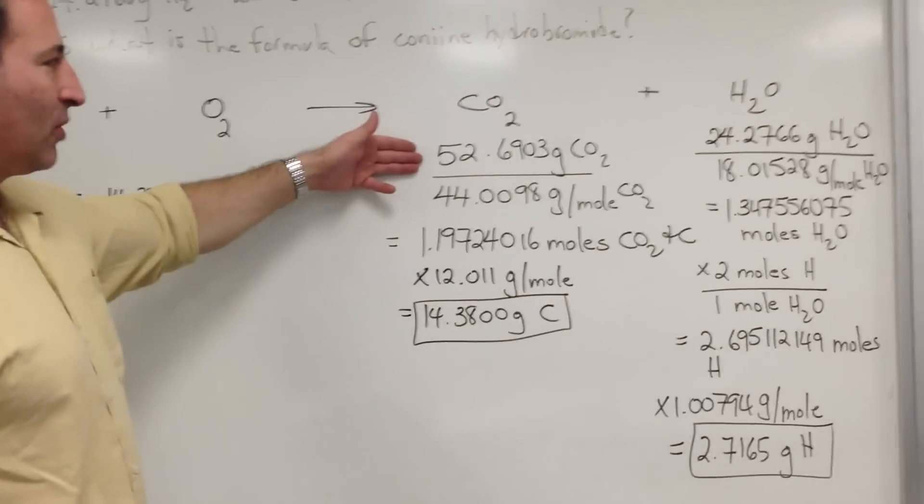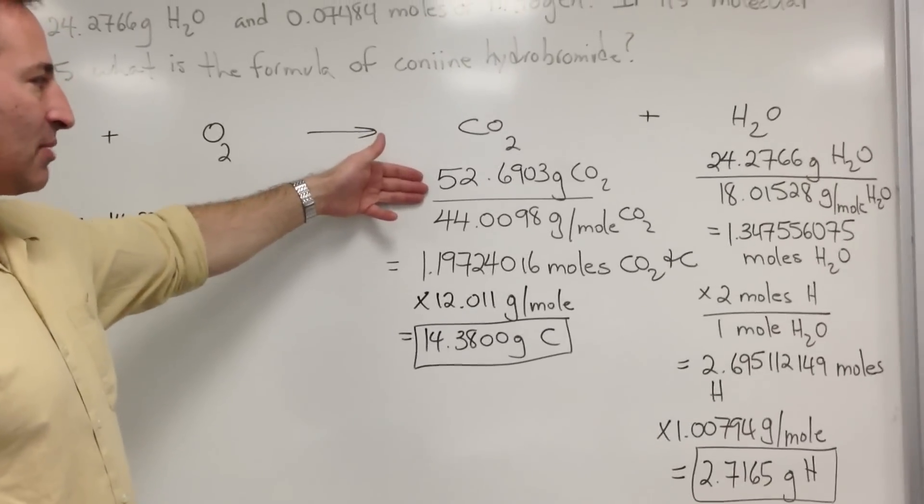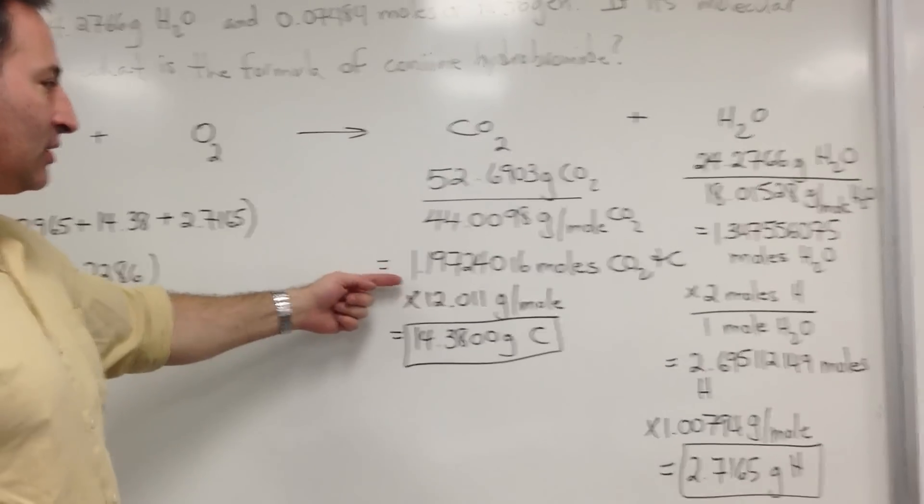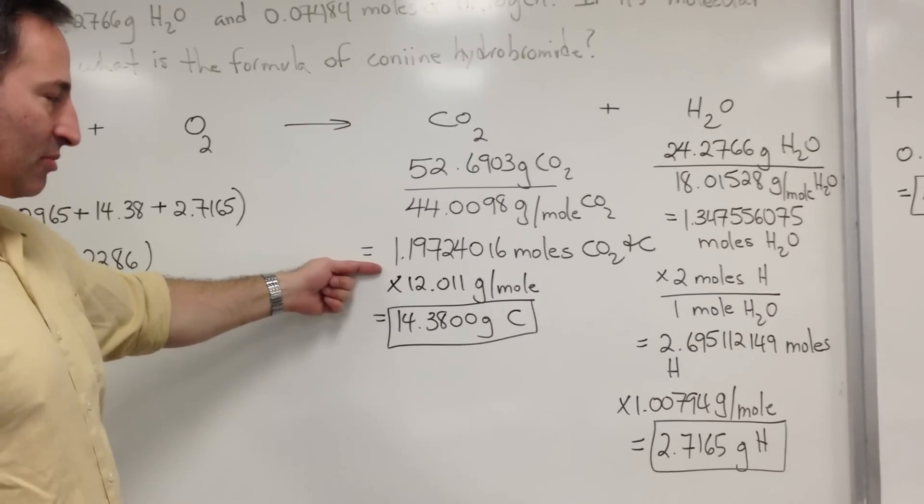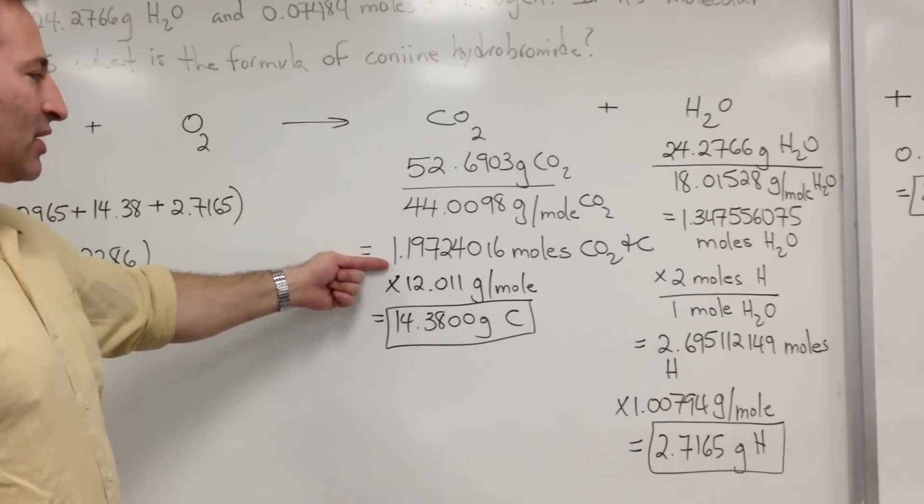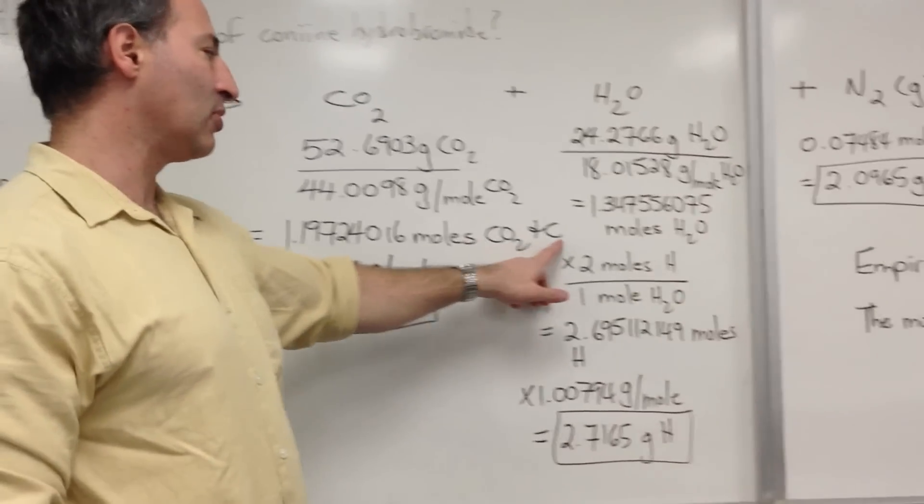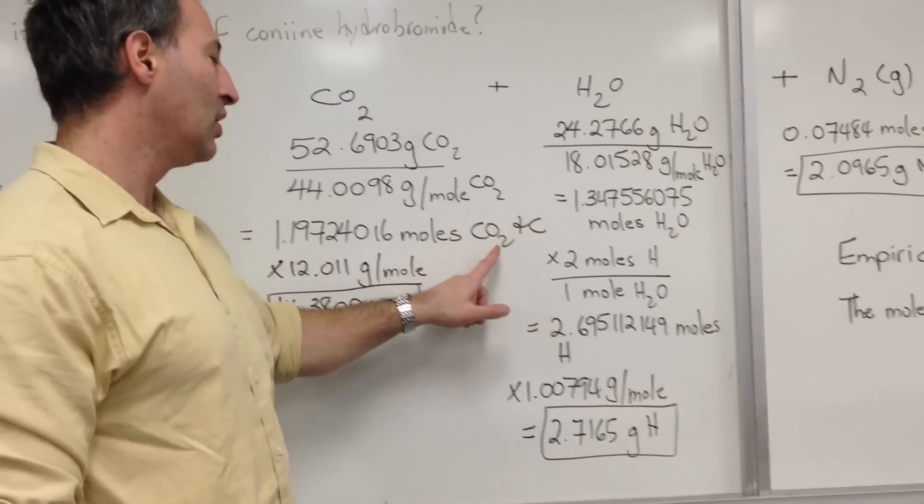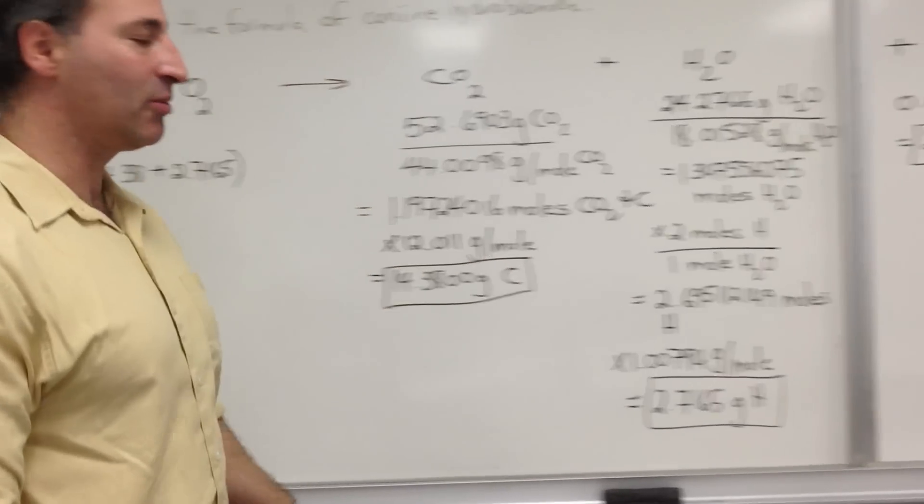In the first step, we use the mass of carbon dioxide produced divided by the molar mass of carbon dioxide to tell us how many moles of carbon dioxide are produced. The moles of carbon dioxide produced is exactly the same as the moles of carbon present, because each mole of carbon dioxide contains one mole of carbon.